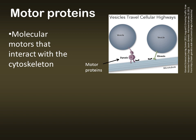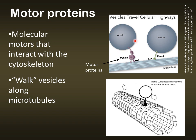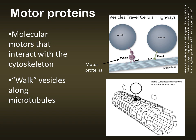Motor proteins are the final group associated with the cytoskeleton, and they interact with the cytoskeleton to perform movements of various types. For instance, these motor proteins walk along microtubules to pull vesicles along. Those vesicles carrying materials through the cell aren't just floating through the cytoplasm — they are actually being walked along by these motor proteins, as you can see in the little animation below. Those motor proteins interact with the cytoskeleton to pull those vesicles from one location to another.